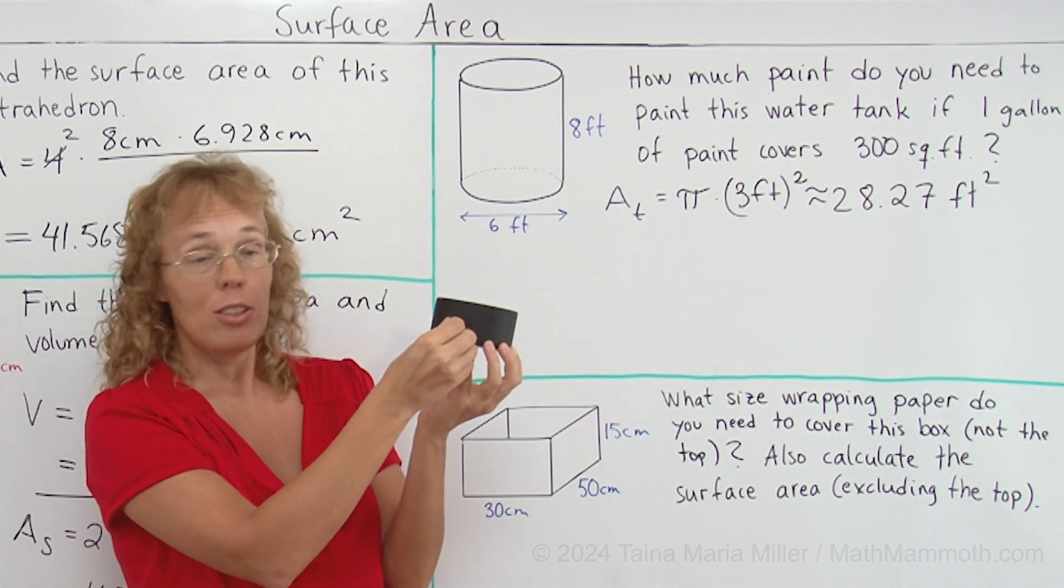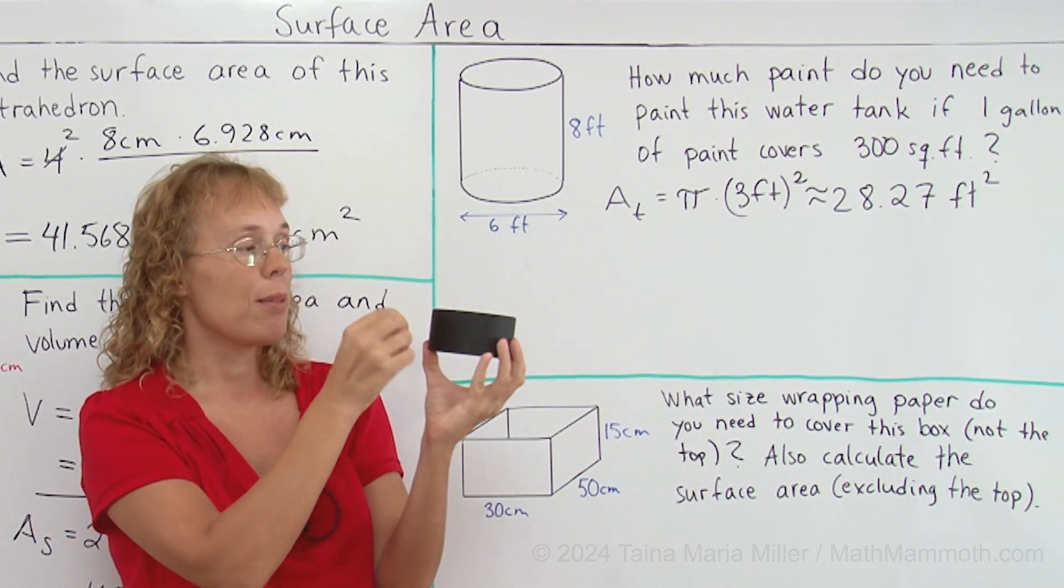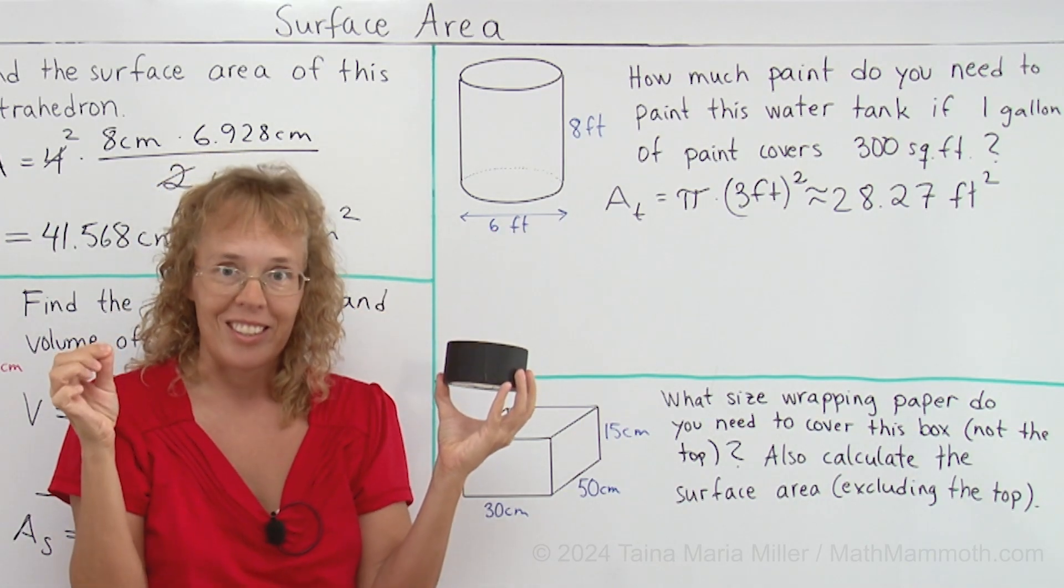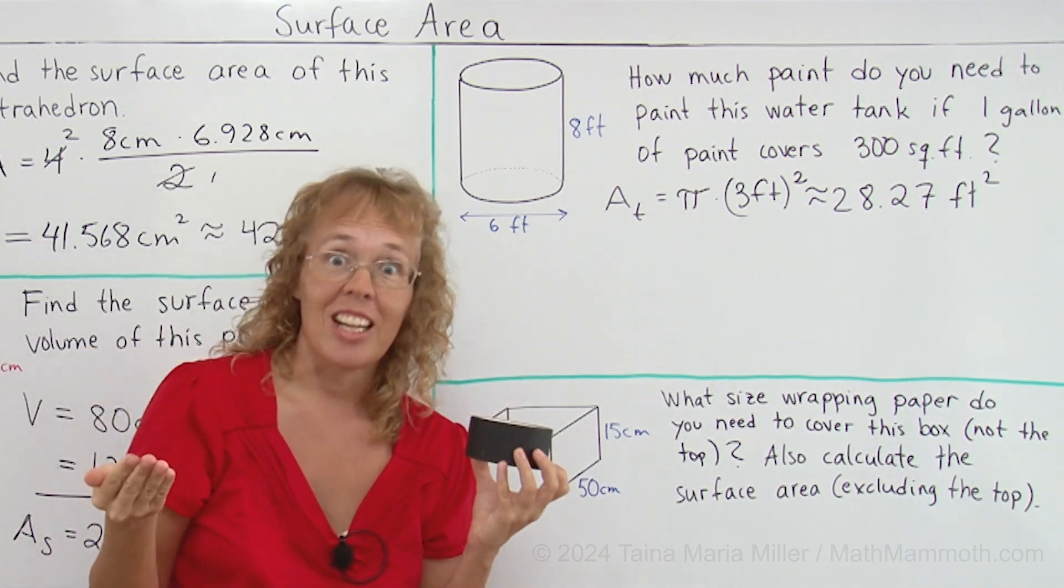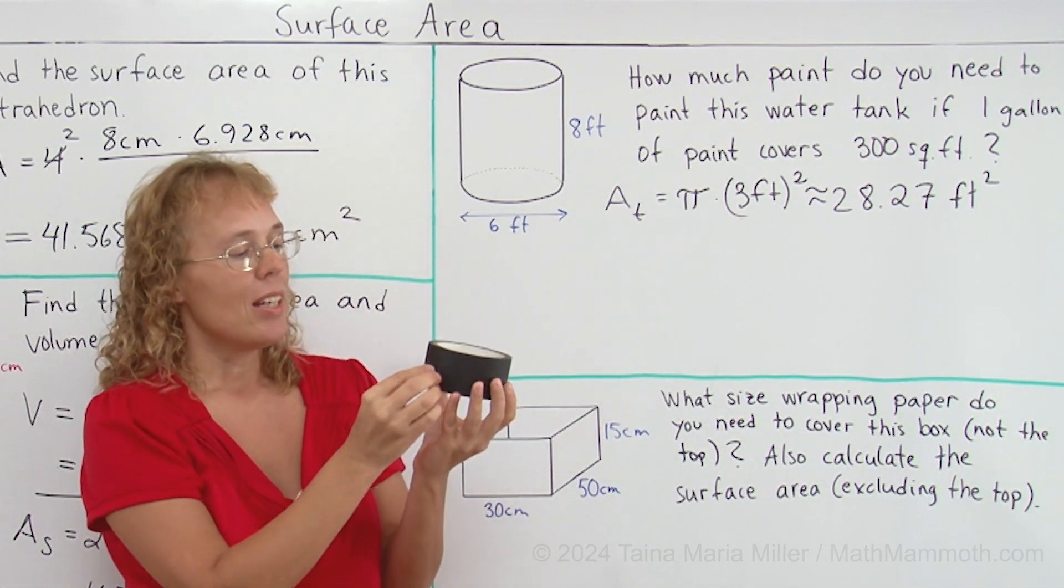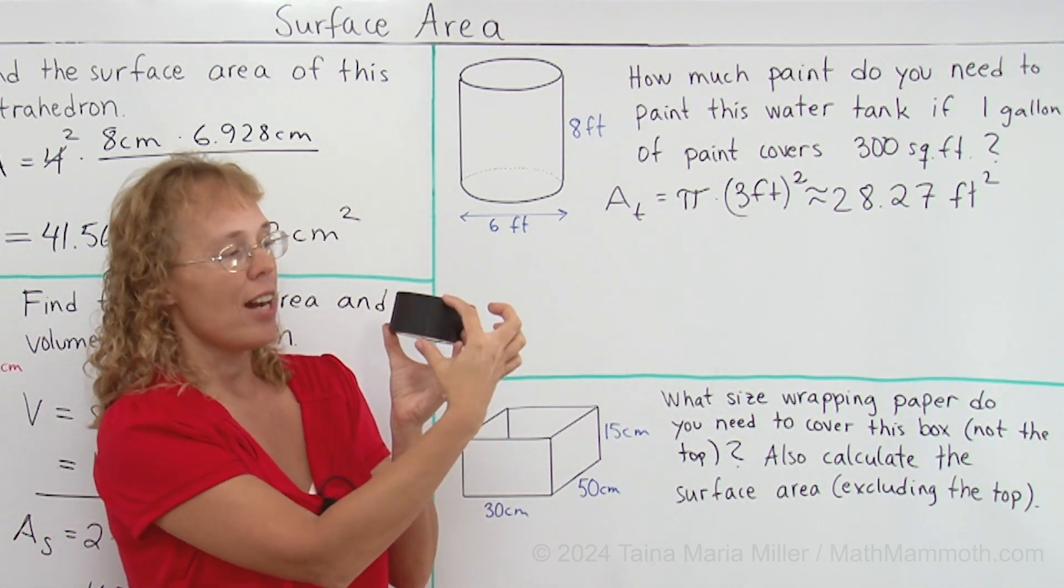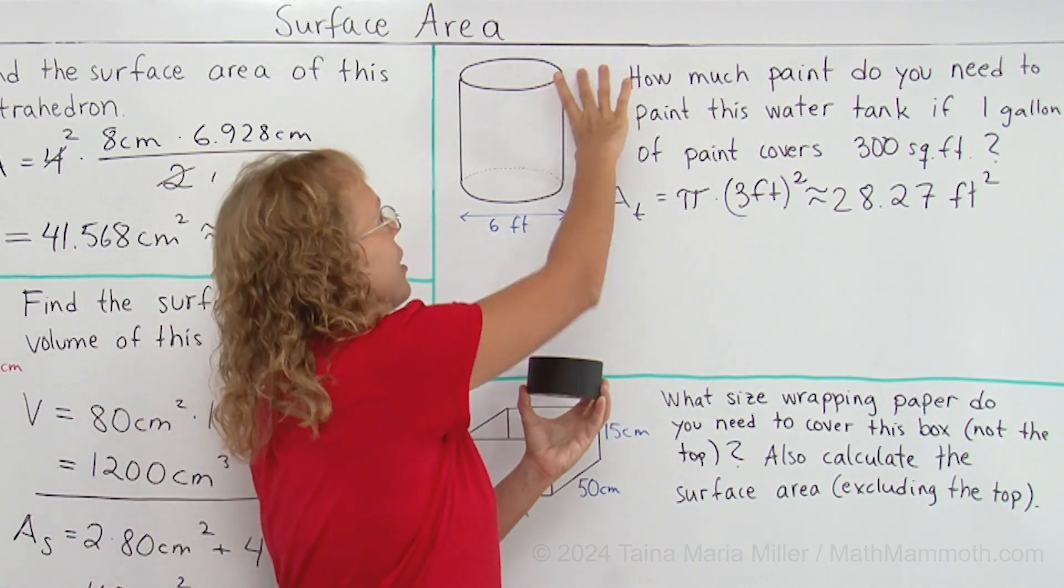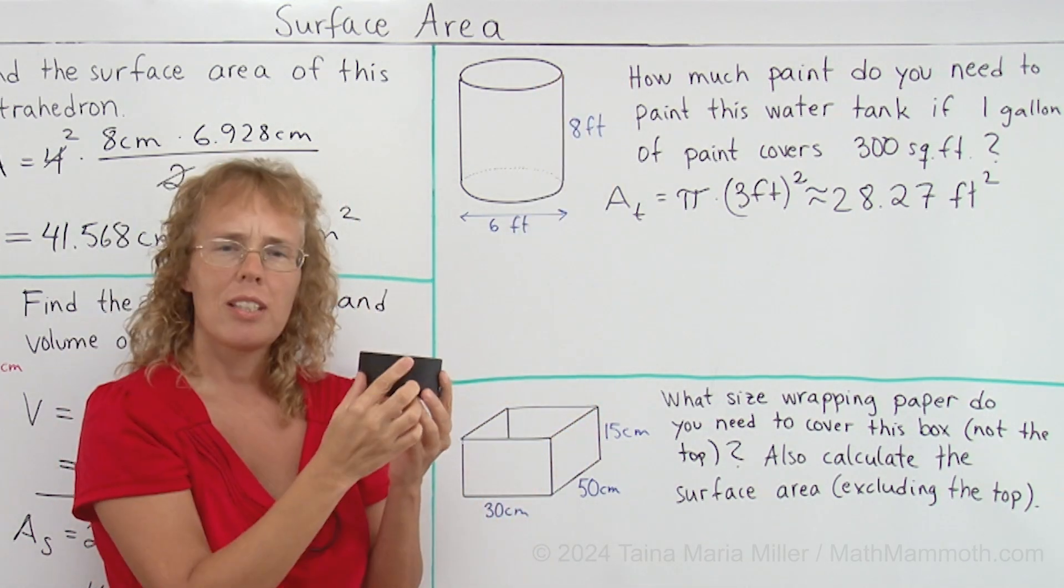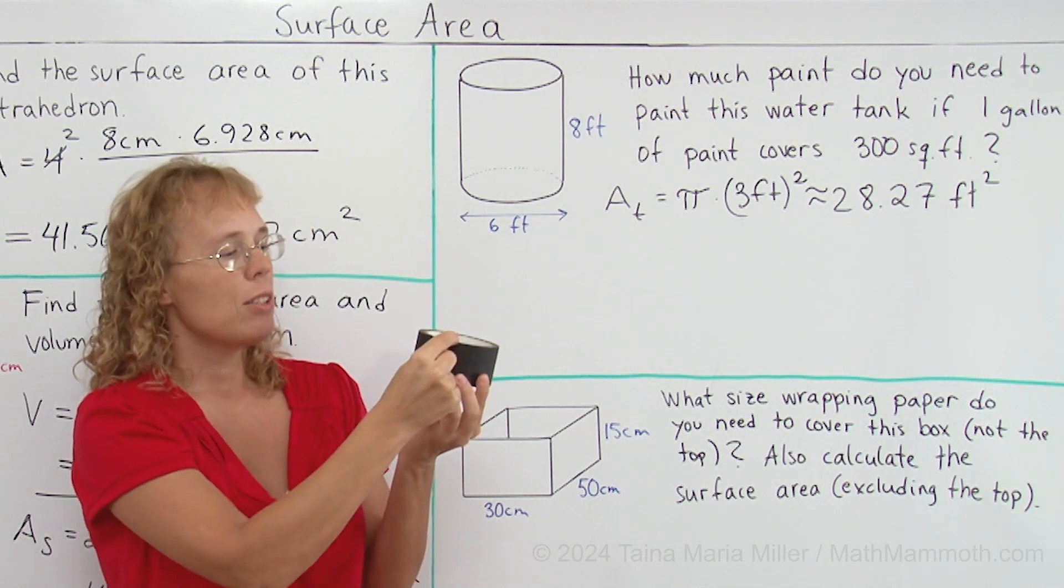Imagine you took a piece of tape that goes around here, it's a rectangle so its area is easy to calculate as a rectangle. The rectangle's height would be of course the height of the cylinder here, eight feet.